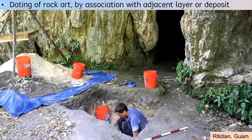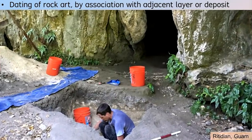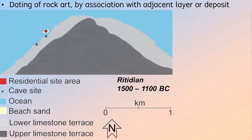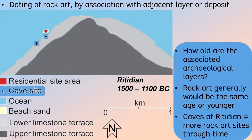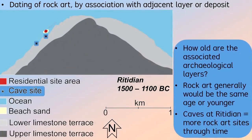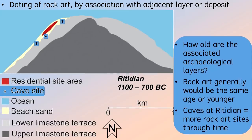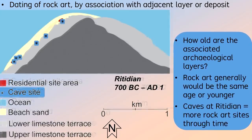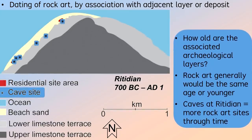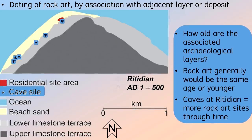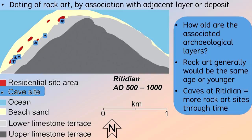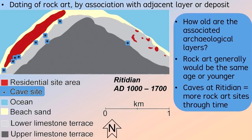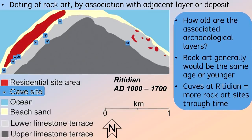Most often, rock art can be dated by the age range of archaeological deposits in juxtaposed positions. For example, if a site area is known to date within a certain time range, then the associated rock art most likely belongs to the same time range. These results may not be as precise or as definitive as might be desired, but they always are instructive.